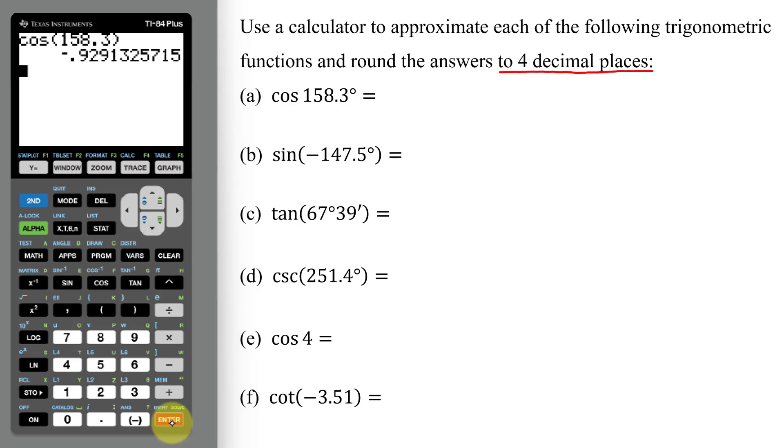Close parenthesis and then hit enter. So I need to round to 1, 2, 3, 4 decimal places. That's the position of the 1. The 3 is not going to affect the 1. So my answer is negative 0.9291.